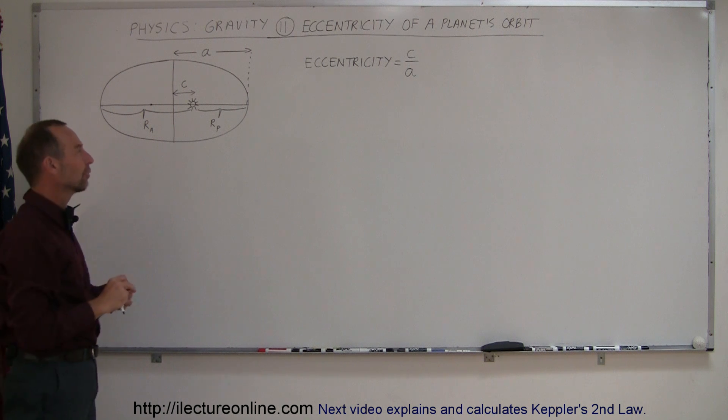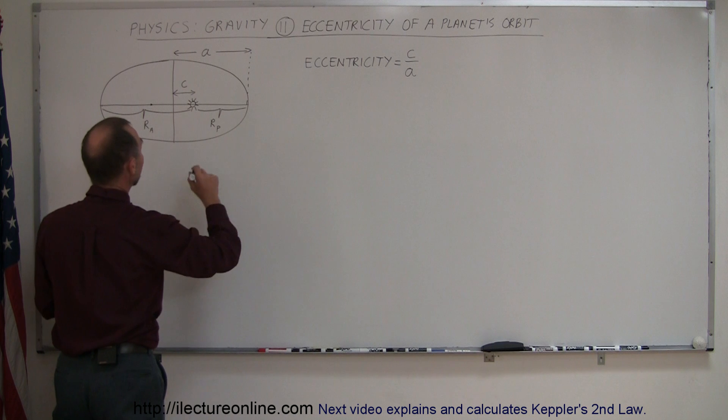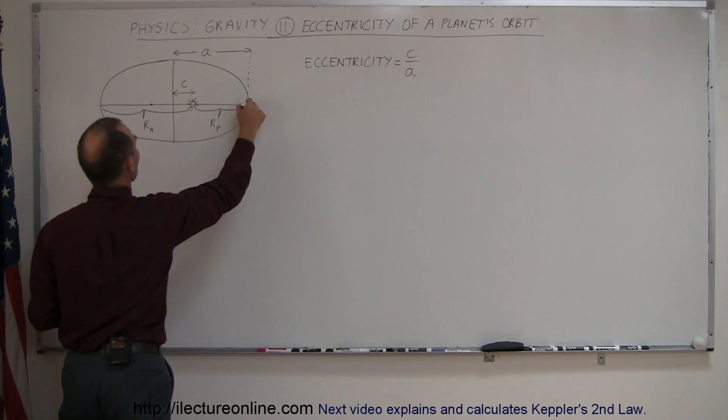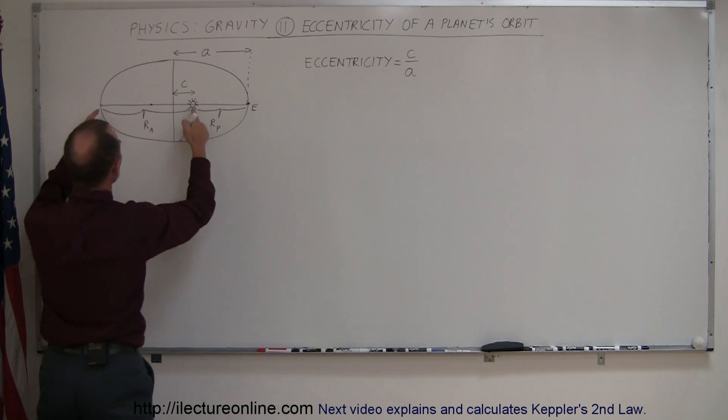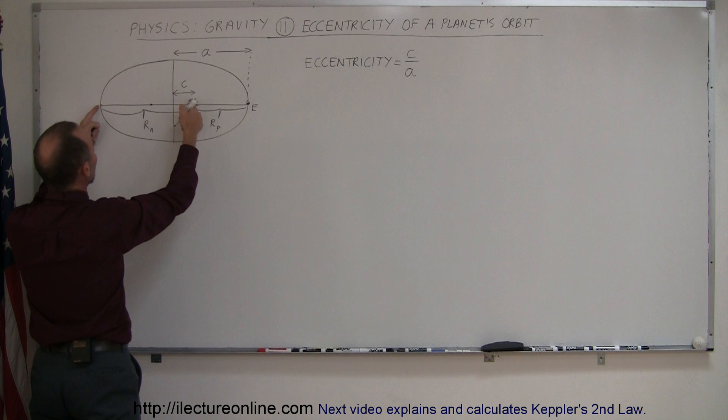But that's more for mathematics. For a practical sense, it's better to think about it where the earth would be located at different points of the orbit. You can see that there's one point where the earth would be the closest to the sun, and then there would be a time when the earth would be the farthest away from the sun.